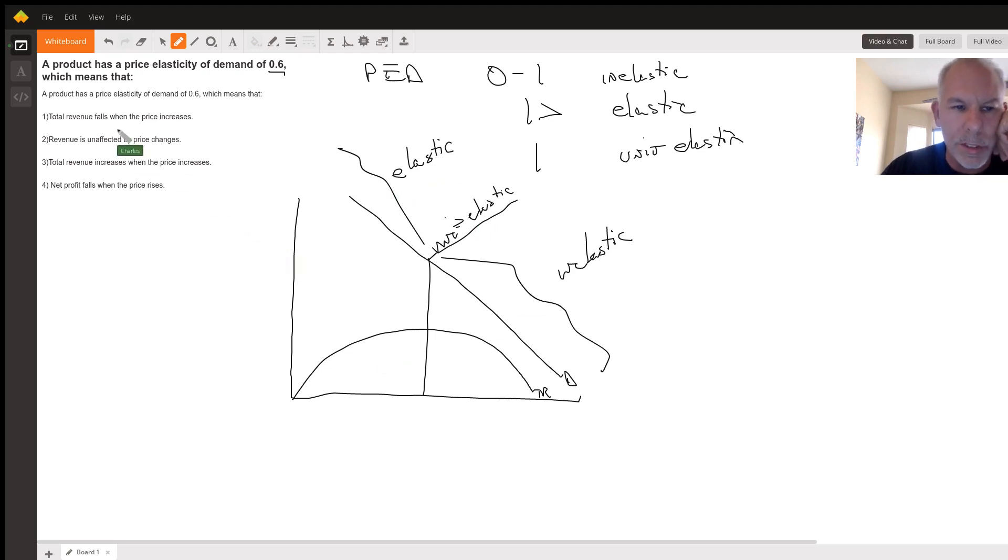So the question says, a product has a price elasticity of demand, which means that total revenue falls when the price increases. Total revenue increases when the price increases. Revenue is unaffected by price change. That can't be true. Why can't that be true?